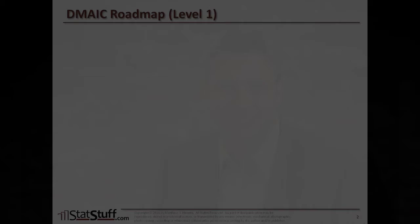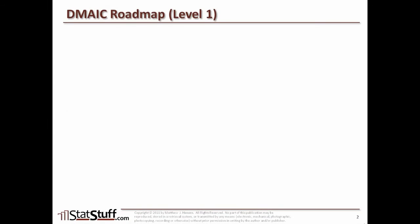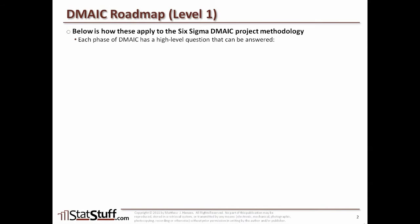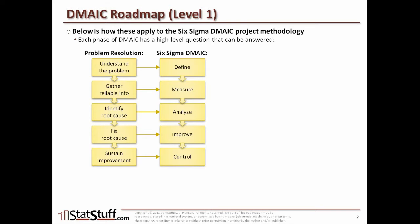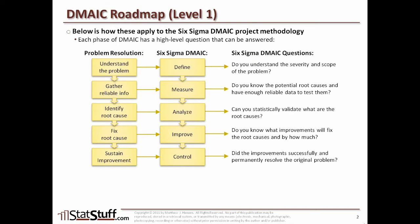Let's begin by looking again at the five basic steps for resolving a problem. Previously, we introduced those five basic steps and then applied them to the DMAIC methodology — the five phases of the Six Sigma DMAIC methodology. Last time we also talked about the high-level questions we would ask for each of those phases.